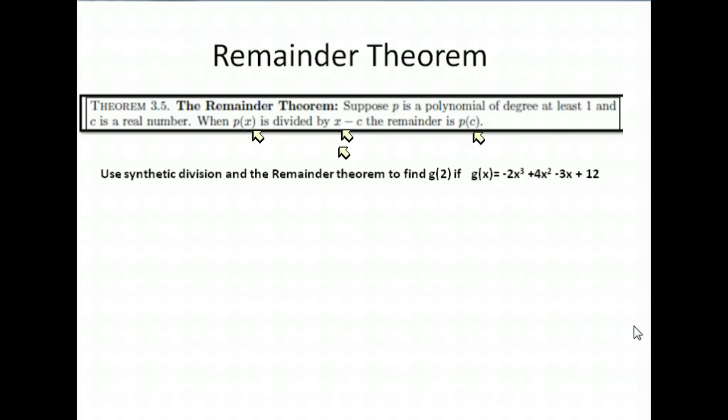The remainder is p of c. Notice p of c is if we put c into the polynomial. We are doing an example of that down below, because I know when you just use letters to explain the whole thing, it doesn't make a whole lot of sense. So let's try to make a little more sense. We have our polynomial down here, g of x. So they said, say you have a polynomial g of x. It's at least degree 1, so it fits the bill there. And c is a real number, our c is going to be 2.